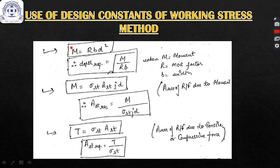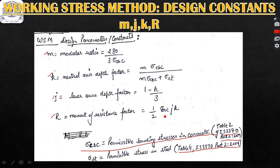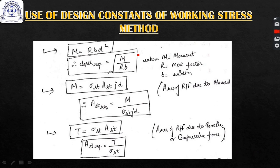For design calculations, we require the dimensions or thickness of a particular section and the reinforcement in that section. The depth required is given by: d = √(M / (R·b)), where R is the design parameter calculated as half times sigma_cbc times J times K.